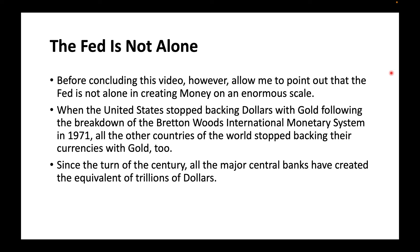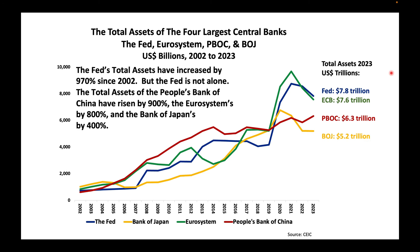Since the turn of the century, all the major central banks have created the equivalent of trillions of dollars. The Fed's total assets have increased by 970 percent since 2002. But the Fed is not alone: the total assets of the People's Bank of China have increased by 900 percent, the Euro system's by 800 percent, and the Bank of Japan's by 400 percent.